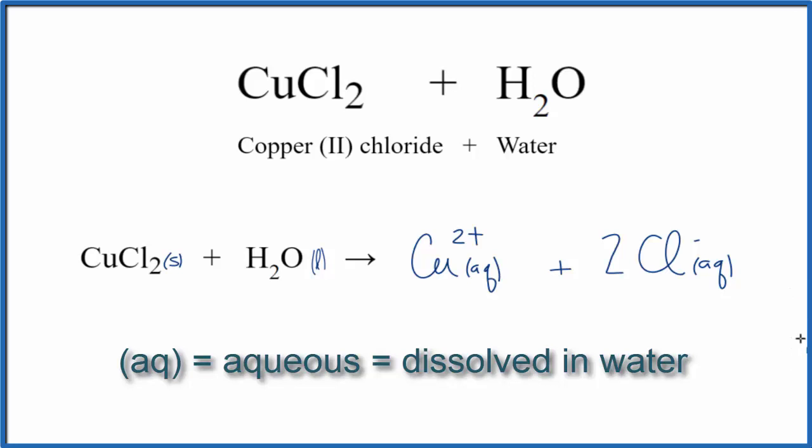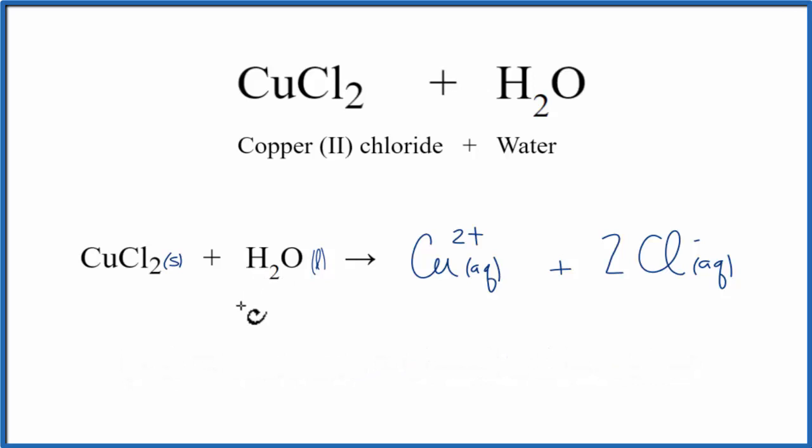And with that, we're done. This is the equation for copper chloride plus H2O. If we let this sit out for a while, the water would evaporate and it would return to our copper chloride. This is Dr. B, and thanks for watching.